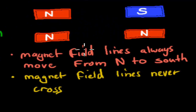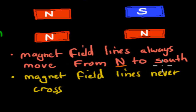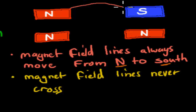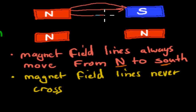You should also know that magnetic field lines always move from north to south — that always happens with magnetic field lines. So here we have a north pole and it goes to a south pole. These might be two separate magnets, and that's how magnetic field lines always behave.